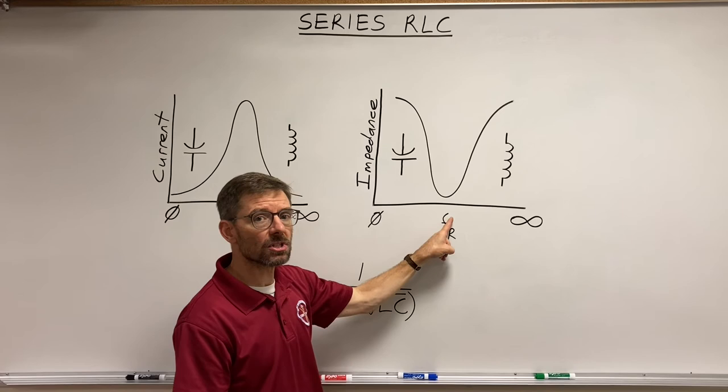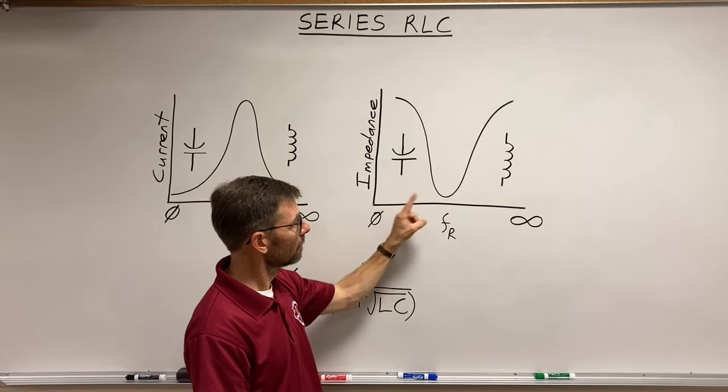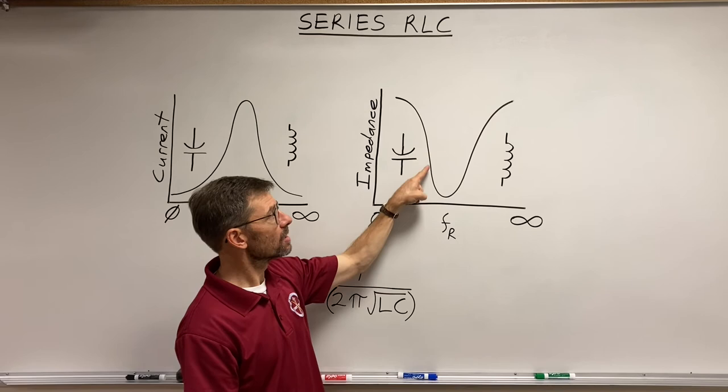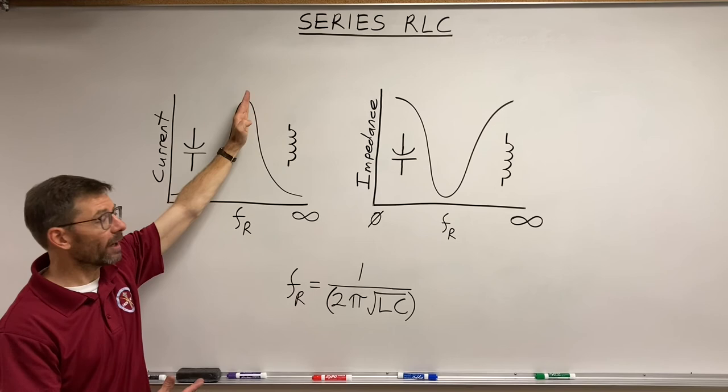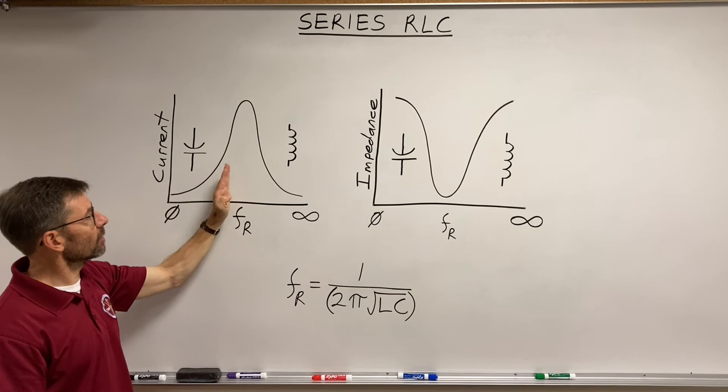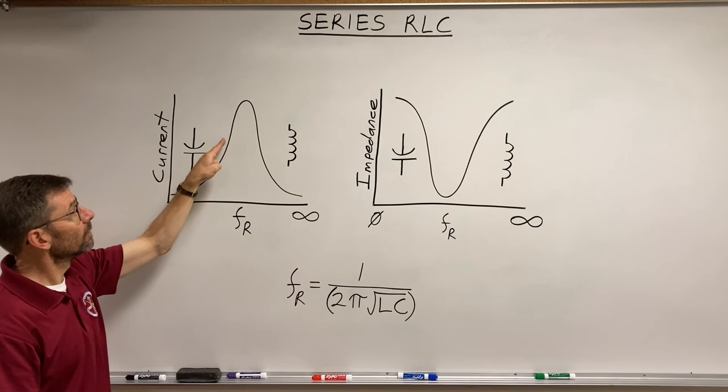We said that at resonant frequency, the R equaled to Z because both reactive vectors canceled each other out. So when I look at impedance, it's at its lowest at resonant frequency. And as the frequency decreases, we enter capacitive territory and the impedance starts increasing. What does that mean with current?